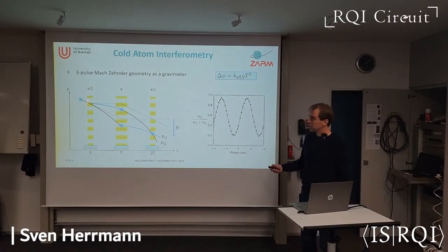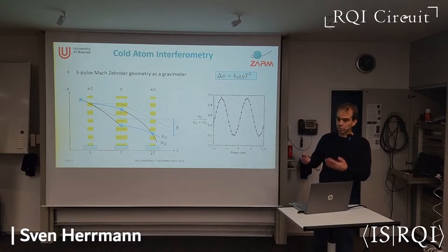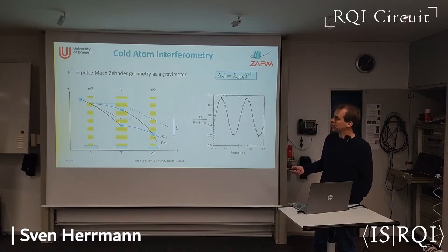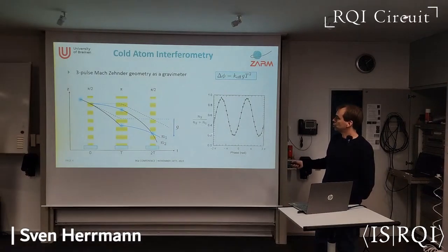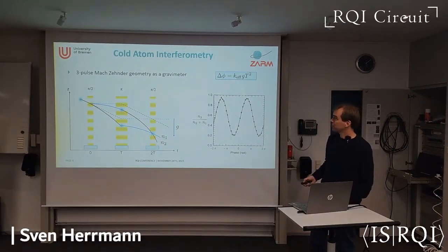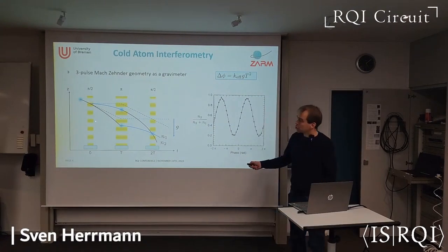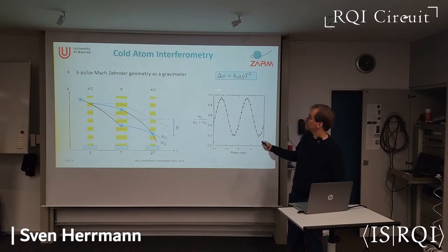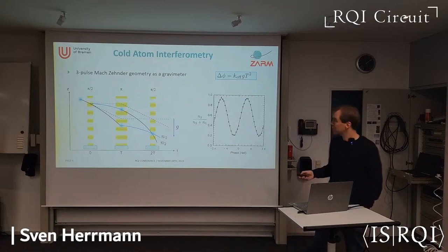We use laser pulses to do the splitting. What I show today is mostly based on Bragg pulses and also Bloch oscillations, which were also mentioned already, to create a coherent superposition of atoms. We then redirect with further laser pulses to get constructive or destructive interference. From the number of atoms detected in the output ports, we determine the accumulated phase. At each laser interaction, the laser phase k·z is imprinted on the atomic wave function, and since z scales with g·t², we get a phase difference of k·g·t².